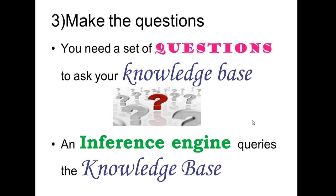Once you have these rules, there's no point having a knowledge base if you can't find answers. So we need a set of questions in order to ask our knowledge base. To do this, we have something called an inference engine, which queries the knowledge base. A common mistake is to talk about a search engine — it isn't a search engine. It doesn't look down fields or records to find the correct answer; it uses an inference engine.